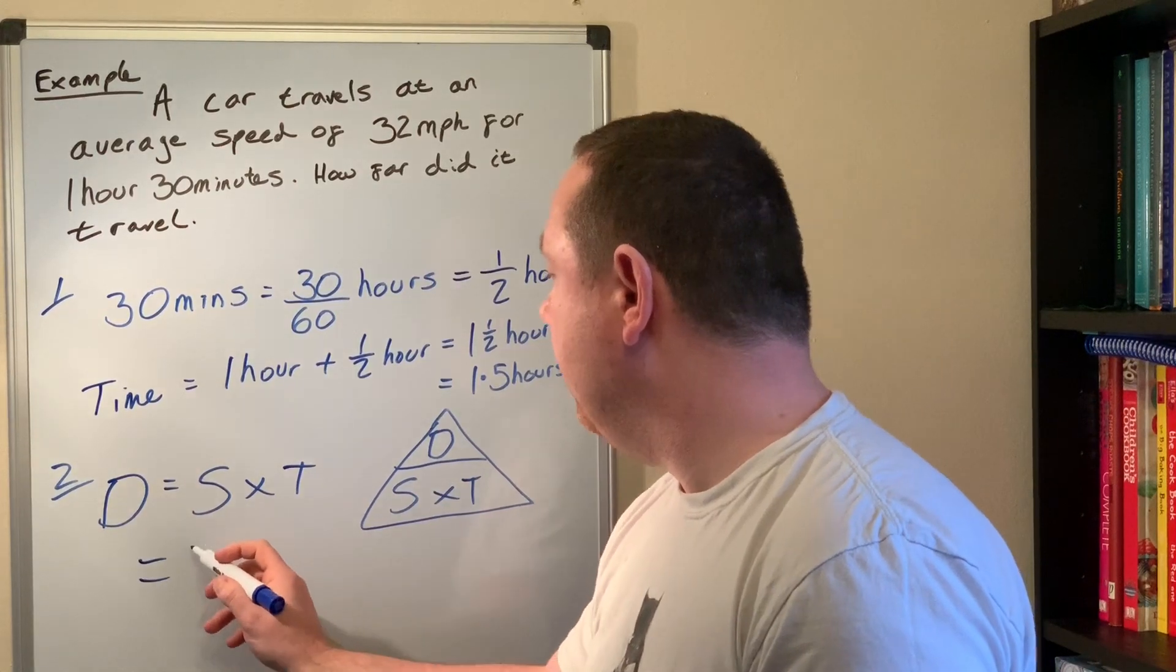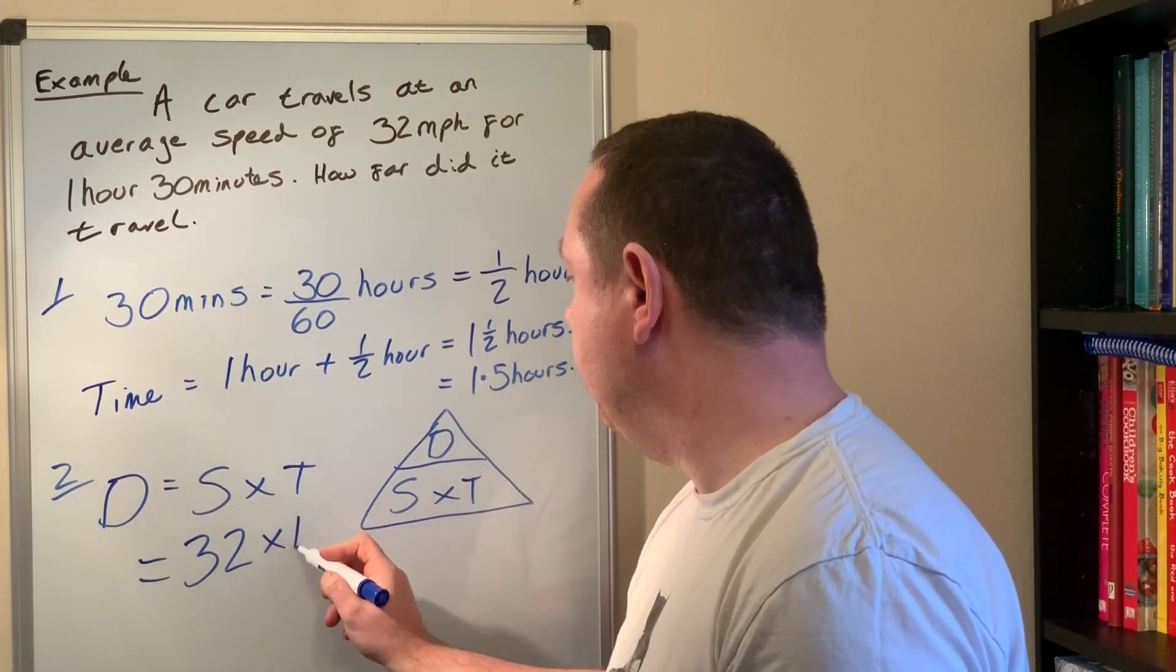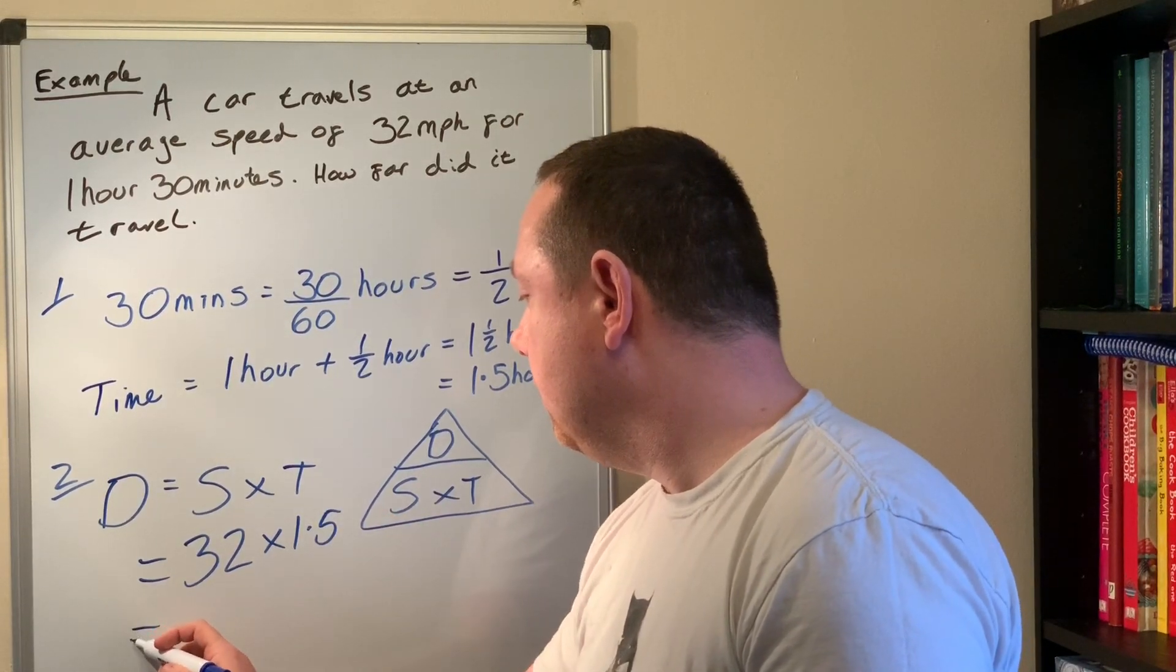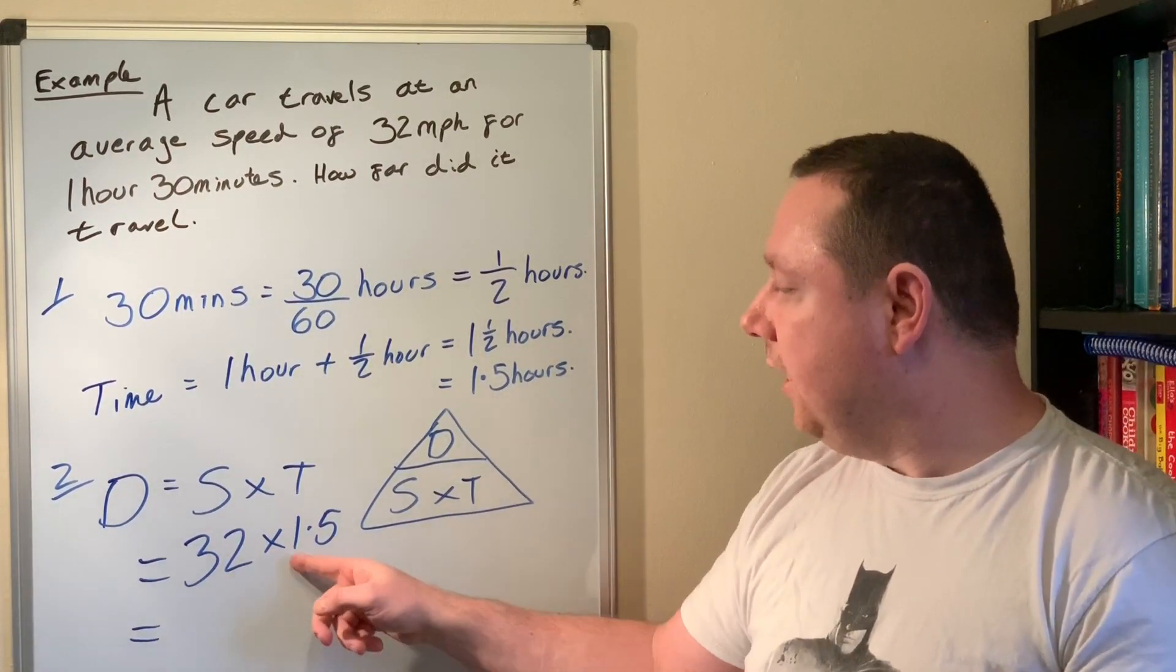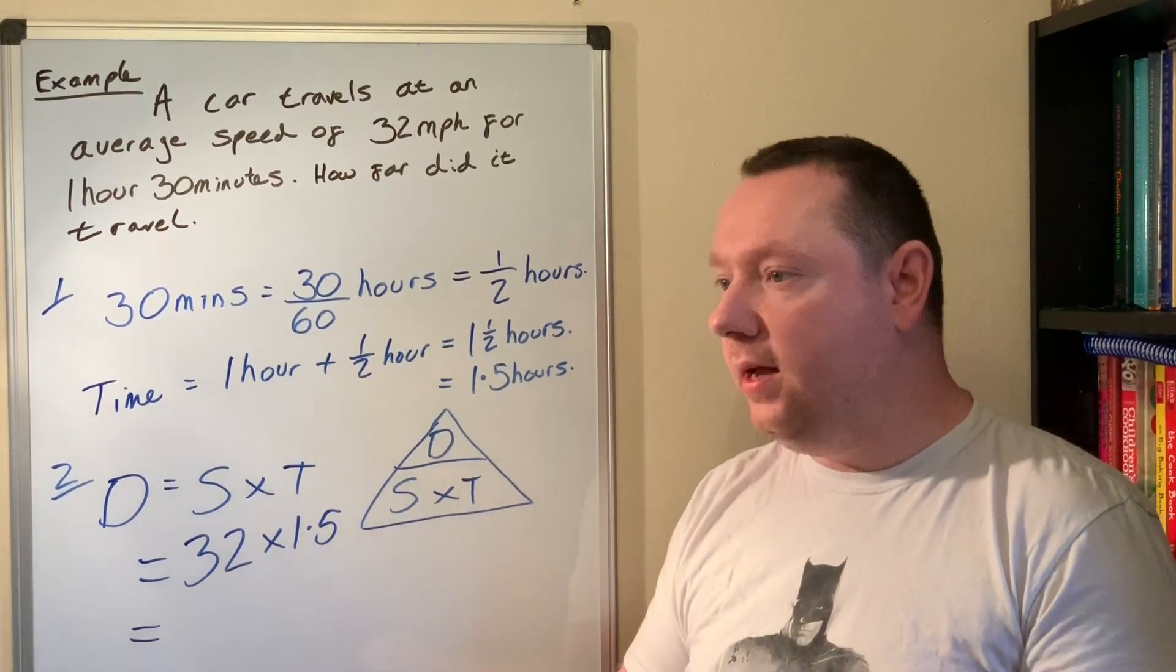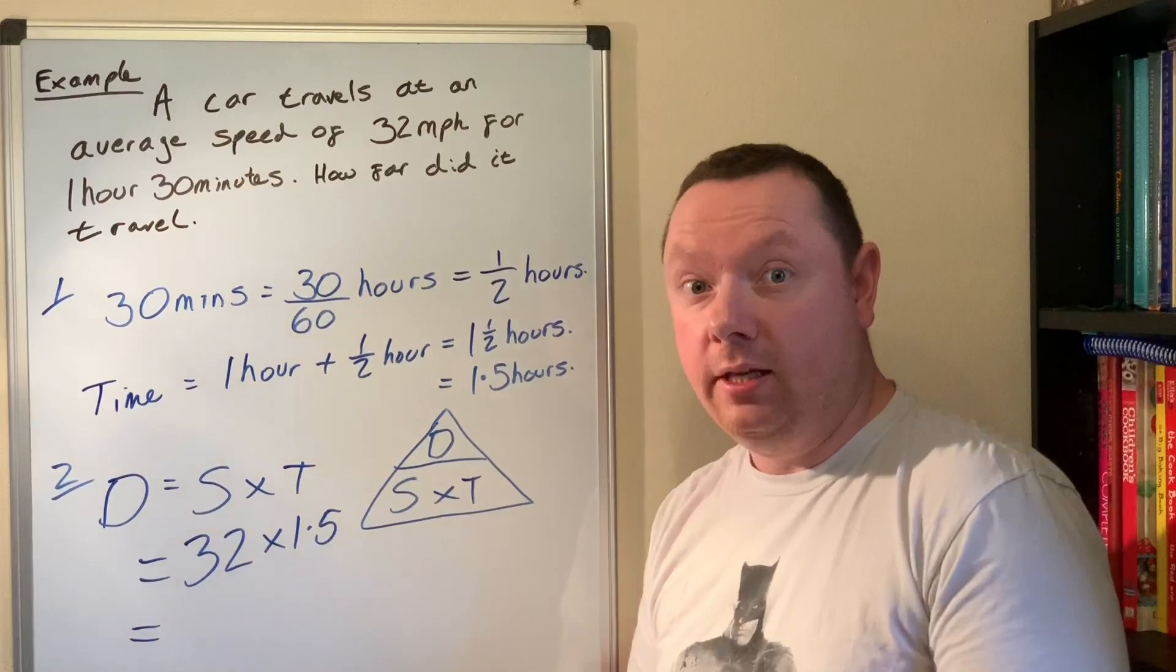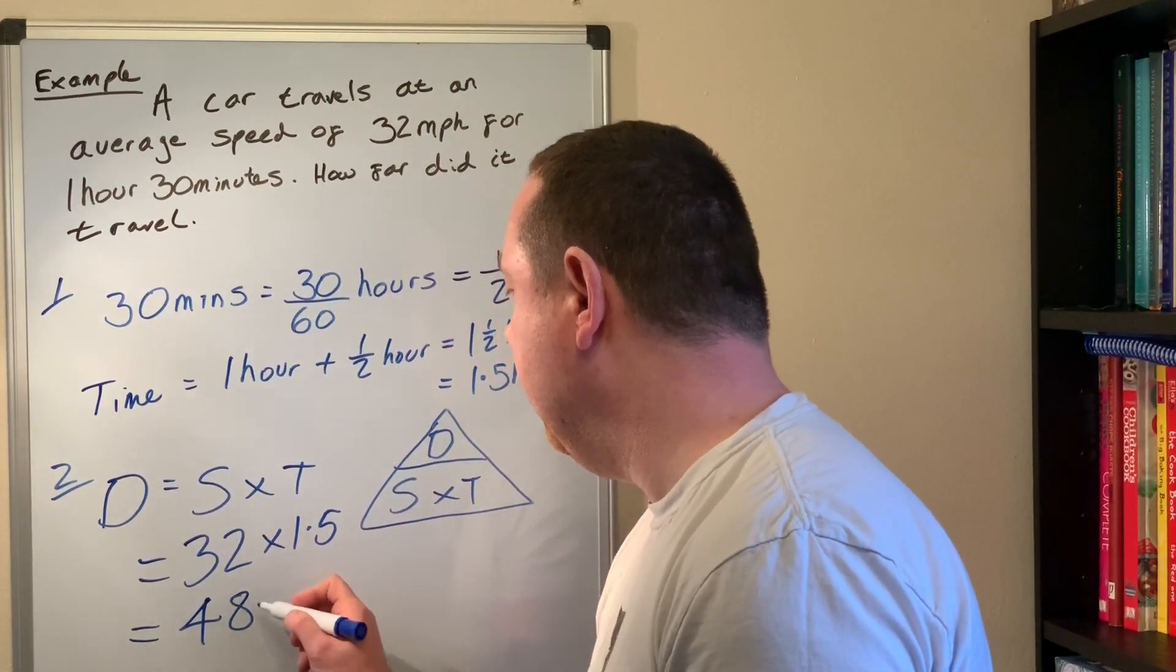Our speed was 32 and it's times 1.5 because it's one and a half hours. A slightly trickier sum to do in our heads. 32 times 1 is 32. A half or 0.5 of 32 is 16. So I need to do 32 and 16 to get 48. So the final answer is 48 miles.